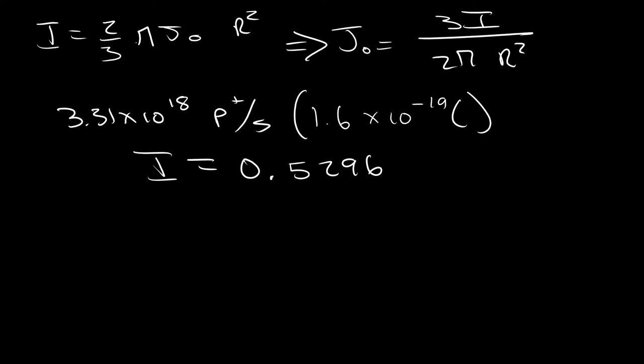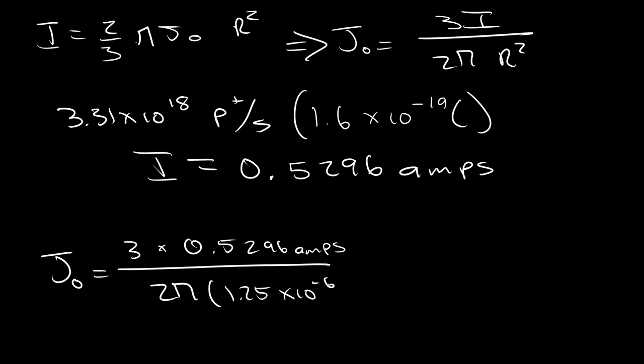And when we do that, we get a current of 0.5296. And on the next slide, I'm going to show you a Mathematica cell that calculated this. And then for J₀, we can basically just plug in everything that we know. So we can plug in this I we calculated, and then we can also plug in our 1.25 micrometers here to get that J₀ is equal to 3 times 0.5296 amps divided by 2π times the quantity 1.25 times 10 to the minus 6 meters. And we can calculate this, and when we do that, we end up getting 1.618 times 10 to the 11 amps per meter squared.